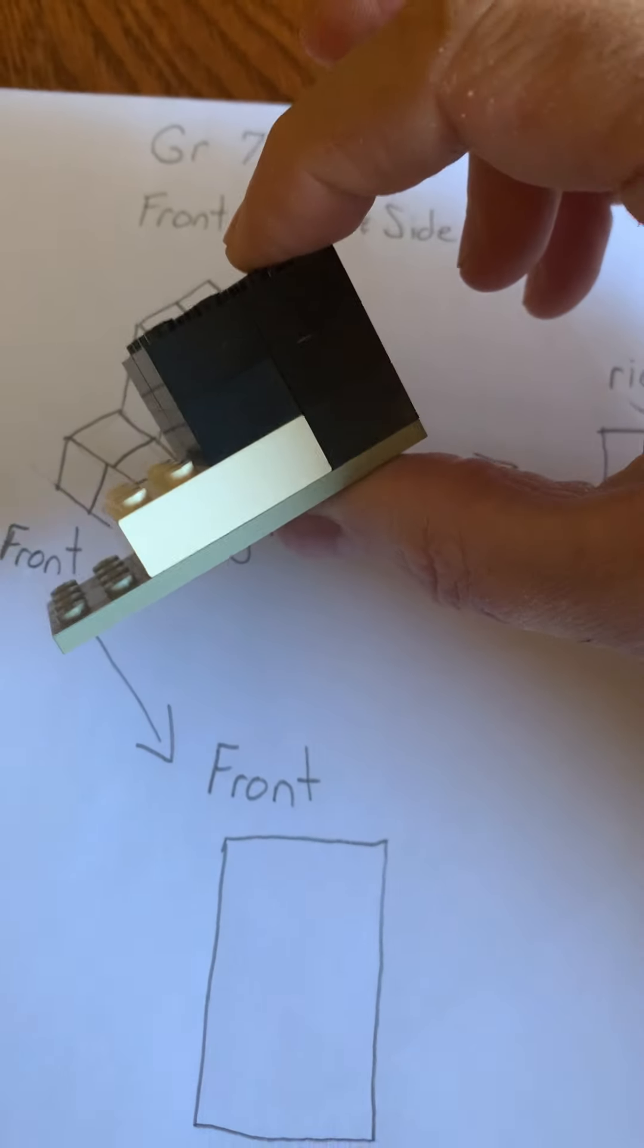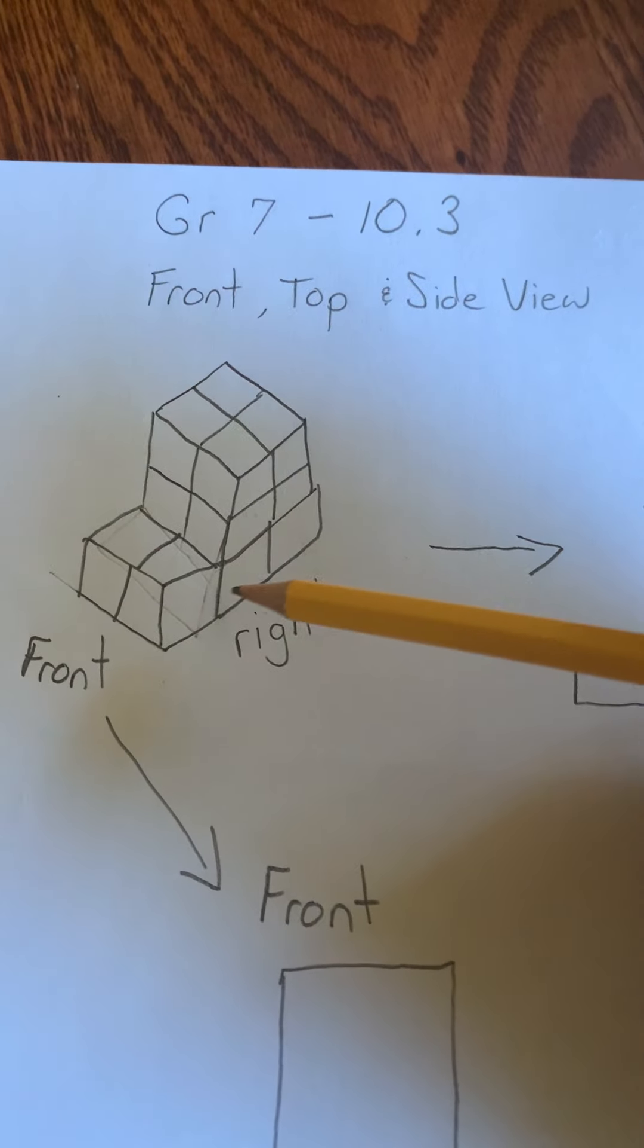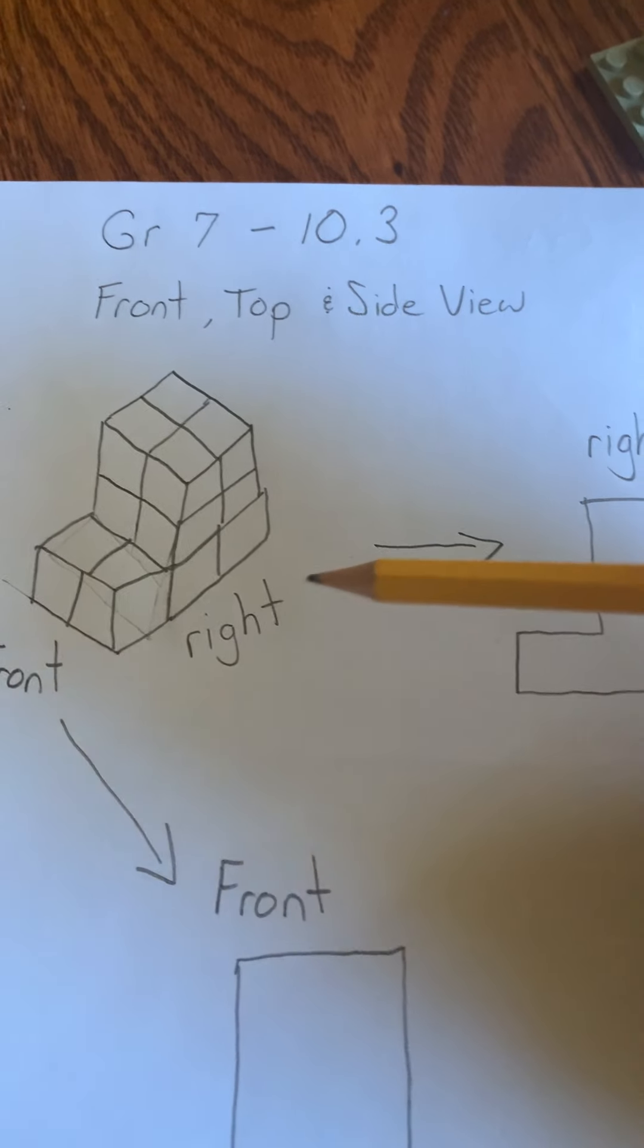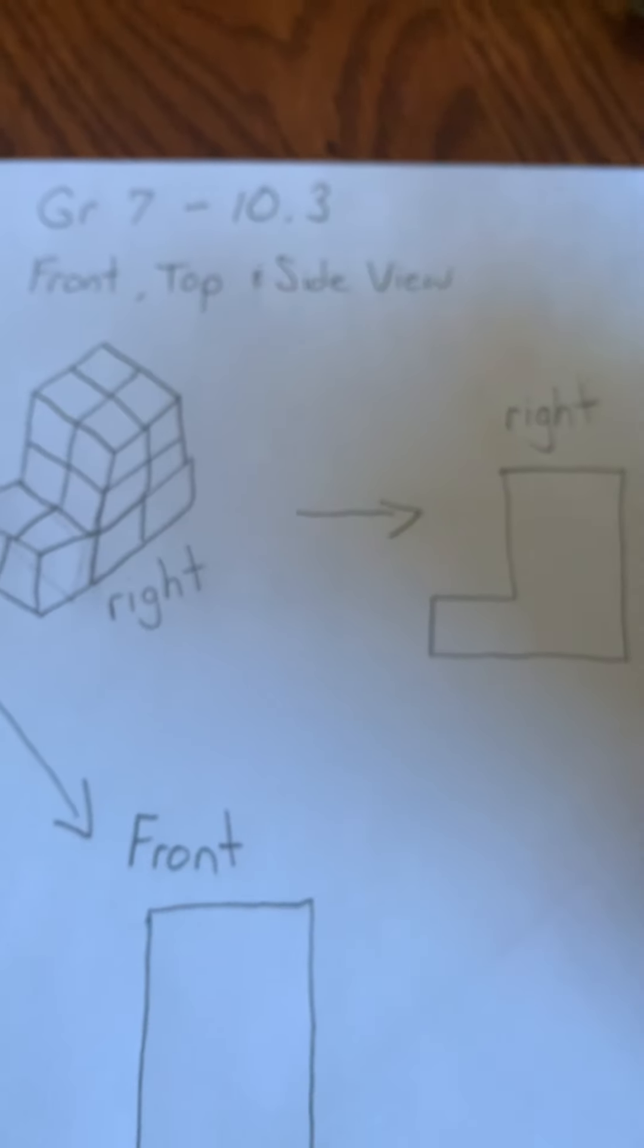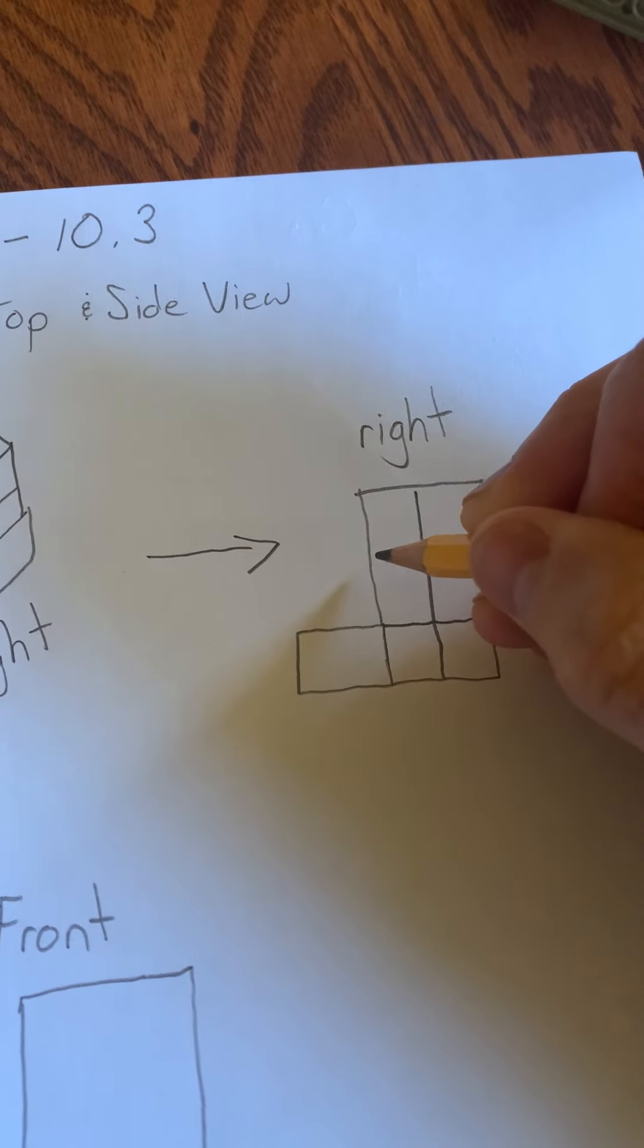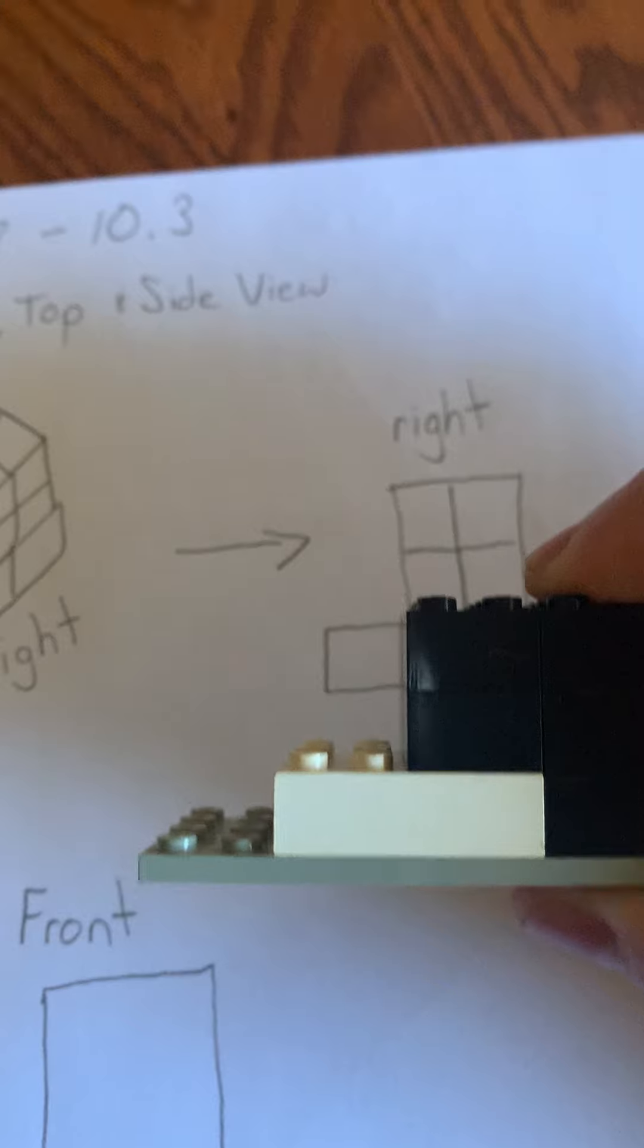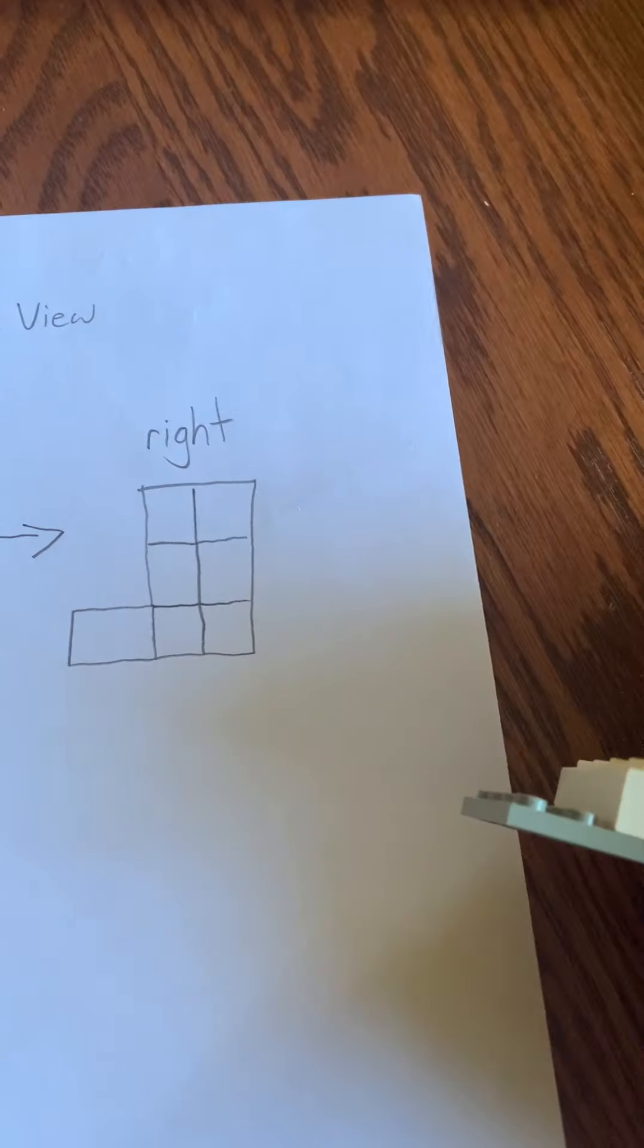What we're asking you guys to do today is to take a look at these shapes and be able to take them and examine them from different viewpoints. So for example, we've got the right view. If we come over to the right, we'll notice that the view from the right looks something like this. So I have drawn that outside shape. What we need you guys to do then is to add in the rest of the lines so that it would look like this.